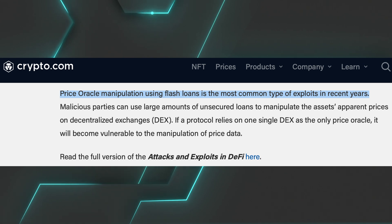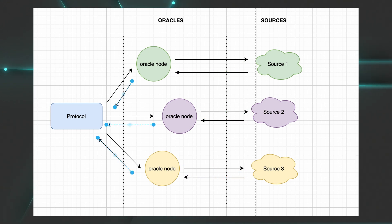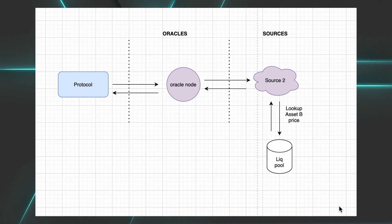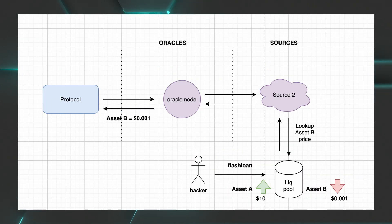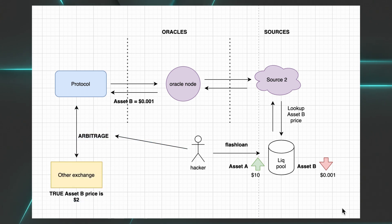Usually, a protocol needs data that lives outside of its blockchain, and therefore relies on oracles, which are smart contracts themselves. In some cases, the protocol only relies on a single price oracle. Via a flash loan, a hacker can drain one side of a liquidity pool where the oracle performs price discovery, which shoots the price of the asset up or down multiple folds. The hacker can then conclude with an arbitrage trade to capture the newly created value.